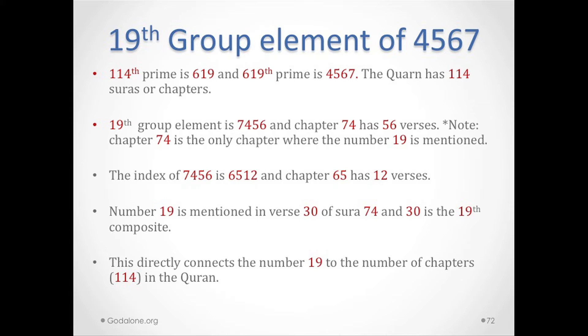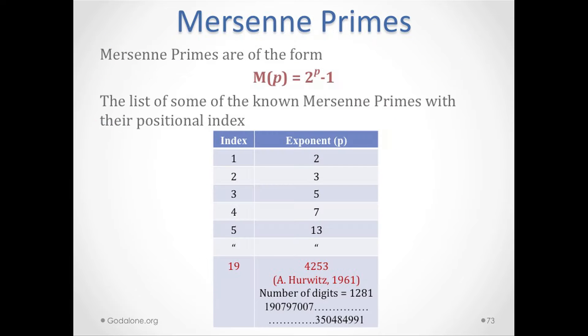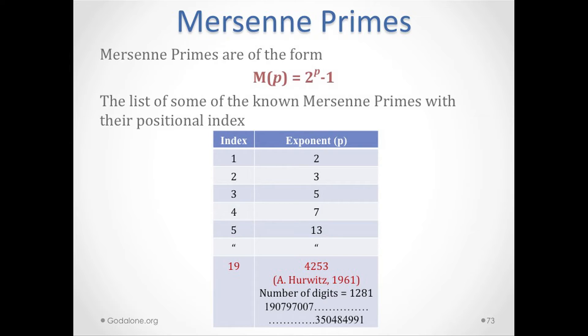This directly connects the number 19 to the number of chapters in the Quran. Now, that big number was generated in 1961. Everything I'm going to tell you here would have been completely meaningless before that. The discovery of this number happened in 1961.